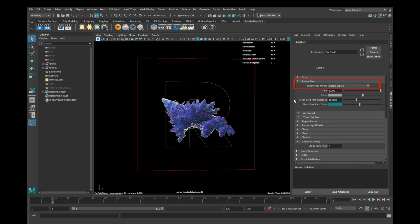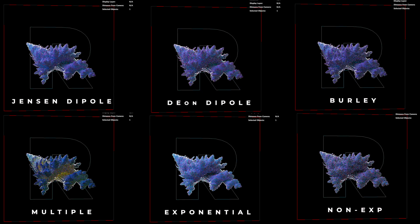Within the Pixar surface shader there are different subsurface models — that means the way RenderMan calculates your subsurface scattering. Jensen and Dion D-Pole are for translucent materials, for example candies. The differences between those two are not that big, but you have to look at which one you prefer.